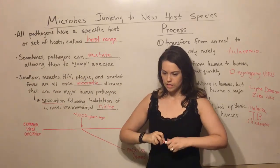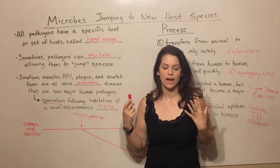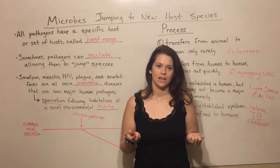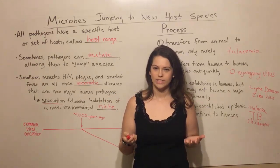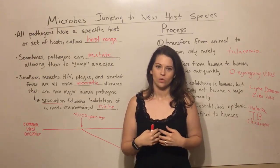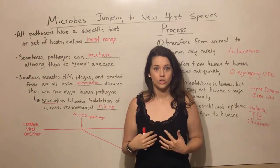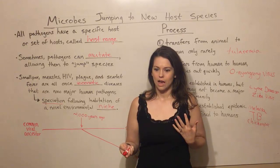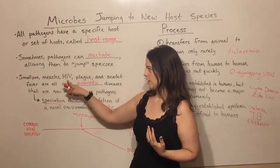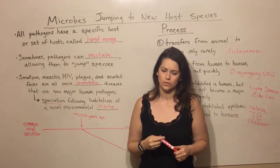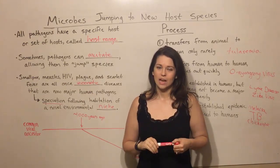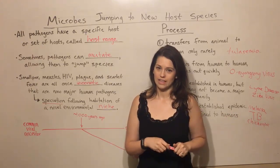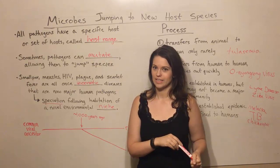These are all examples of pathogens that have jumped into humans. Another question that remains is: what's going to happen next? What's going to be the next pathogen we have to deal with that's new to the human population because it's jumped over from an animal? These things are happening on a fairly regular basis — HIV jumped into humans as recently as the late 1800s. Certainly the next one could be a major killer of humanity that we haven't even discovered yet, so definitely something to keep in mind.